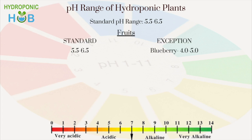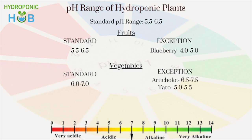The pH ranges of many fruits fall around the standard range, with an exception of blueberry, which has a pH range of 4 to 5. Vegetables are slightly more alkaline than fruits, with most ranging from 6 to 7, with exceptions such as artichoke above the range and taro below it. Certain vegetables like kale, asparagus, garlic, cauliflower, and beans have a very broad pH range and are more alkaline, making them easier to maintain.